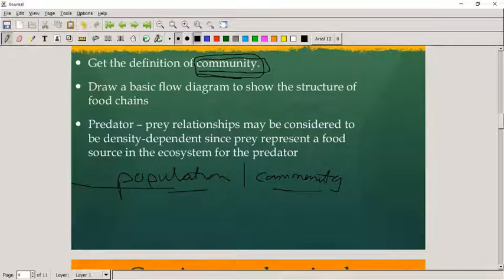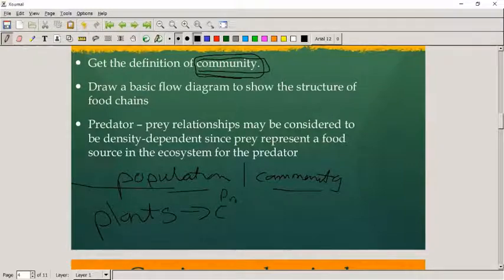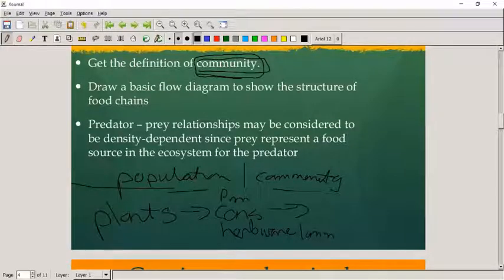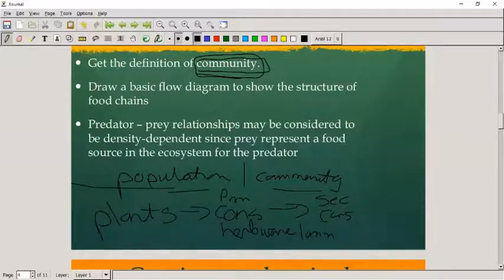If we draw a basic flow diagram to show the structure of food chains, we normally start with a producer. Producers are plants. The plants are eaten by a herbivore, which is your primary consumer. That is always a herbivore, or it can be an omnivore. That gets eaten by a secondary consumer, which is a carnivore. It can go on to a tertiary consumer. Then right at the end, you have a decomposer.